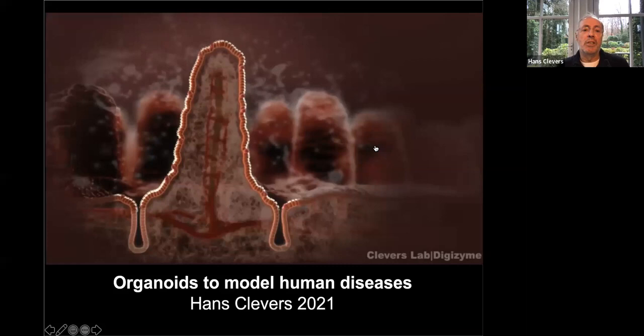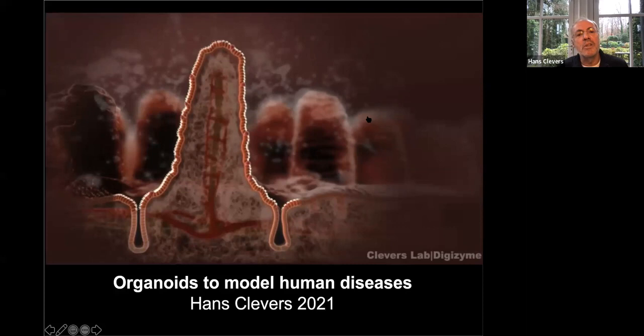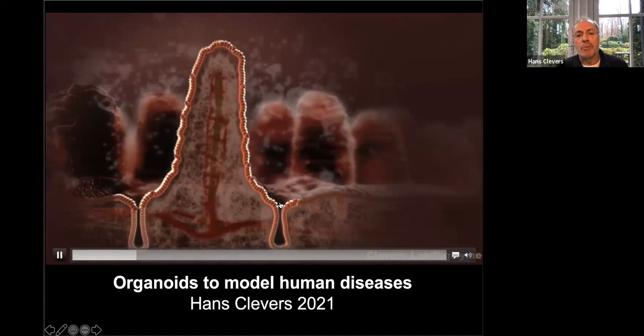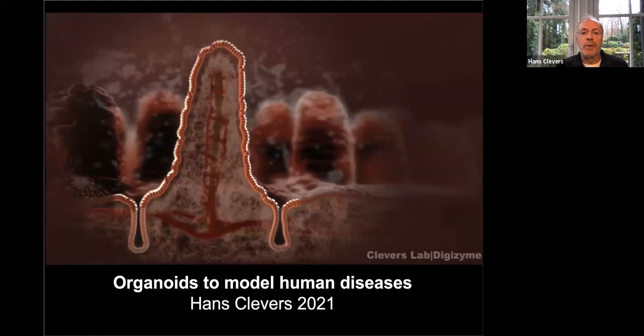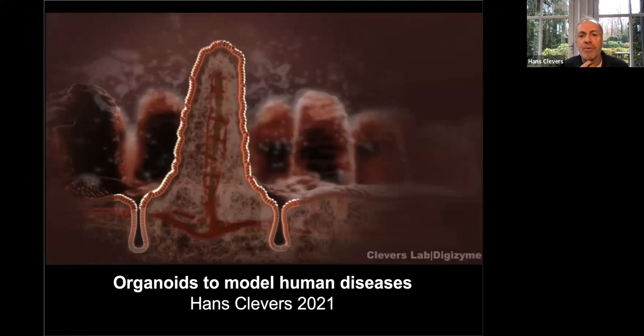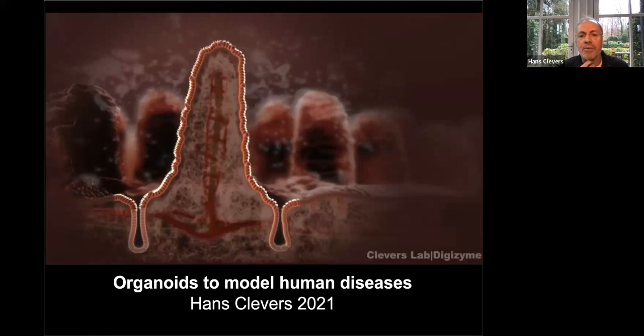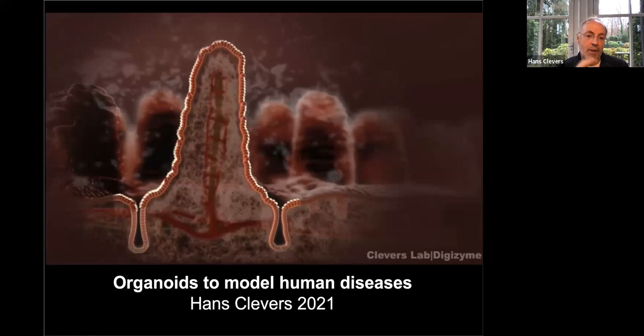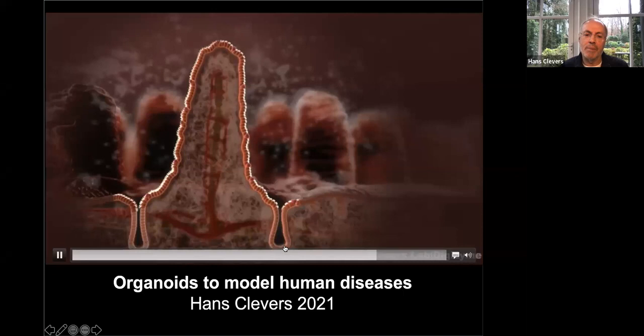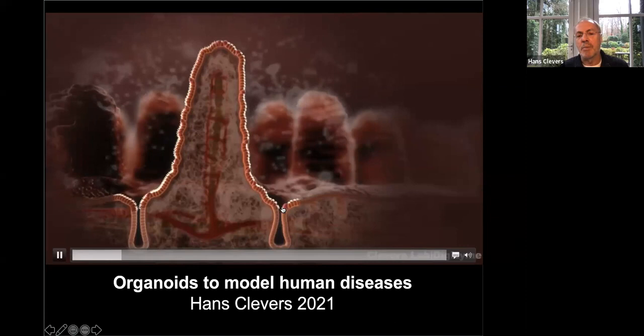This is one villus. A mouse small intestine has about a million of these — maybe a billion — and every villus is surrounded by crypts of Lieberkühn. It was known when we started that there were stem cells at the base of crypts, though not really identified. This was by far the most rapidly cell-renewing tissue we know of. Cells are born at the base of the crypt where the stem cells reside; they divide for about two days while moving up.